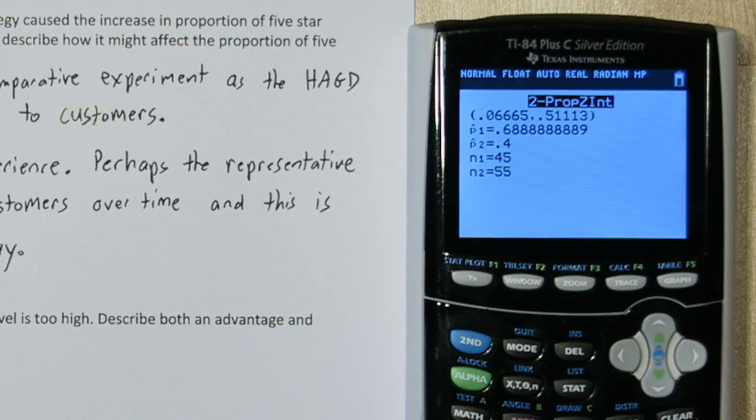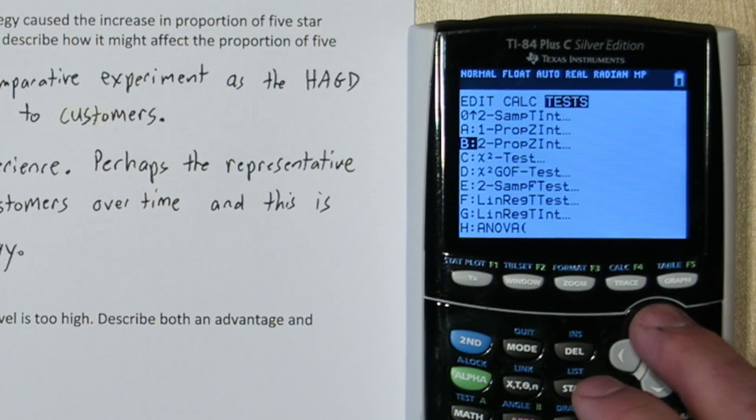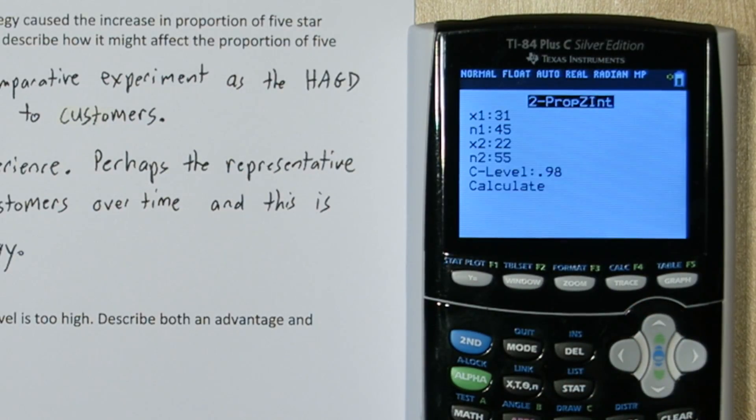Let's change it to a 95% confidence interval and see what happens. If we press stat and we go to test and go to 2 prop Z interval, here's our data from problem 83. And I'm going to change it to a 95% confidence interval.